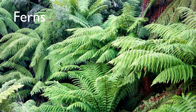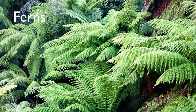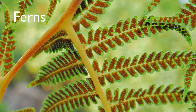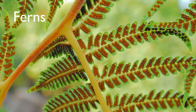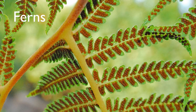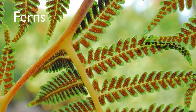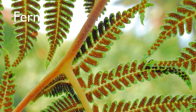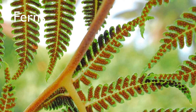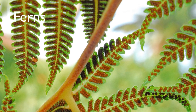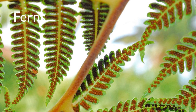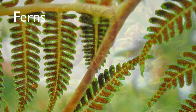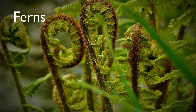Ferns can be identified by their feathery fronds. Unlike mosses, ferns have a vascular system — you can think of it as sort of a plant circulatory system. The vascular system carries water up from the roots and nutrients down from the leaves. This allows ferns to reach larger sizes than mosses. However, they still have sperm that swim through the environment, so they also live in moist habitats.